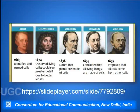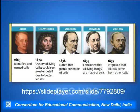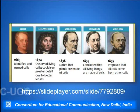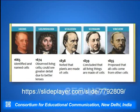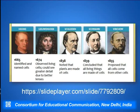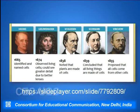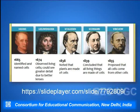Let us see how exactly, in the timeline of history, the cell was discovered and what were the various theories or hypotheses which came under play. In the year 1665, Hooke for the first time identified and named the cell. Subsequently, Leeuwenhoek in the year 1674 observed living cells and could see greater details due to the presence of the lenses.